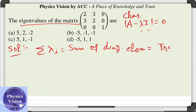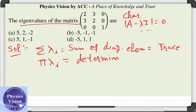There is another property: the product of the eigenvalues is equal to the determinant. So one property gives the sum of the eigenvalues and the next property gives the product of the eigenvalues.